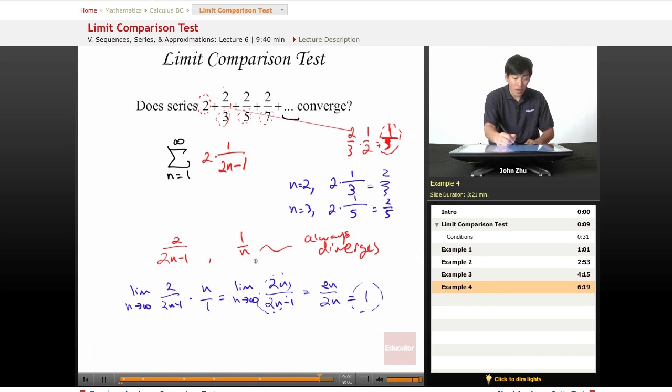And since we know that 1 over n diverges all the time, then our term here, our series here, will always diverge. So the series is divergent, or it diverges.